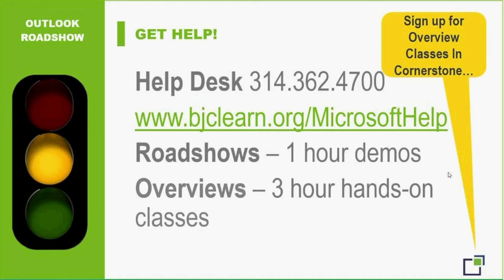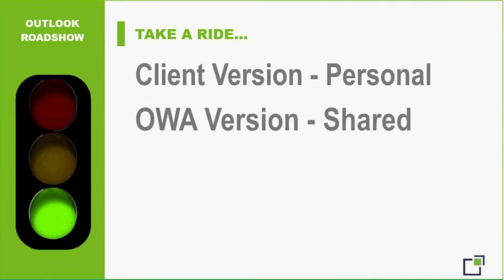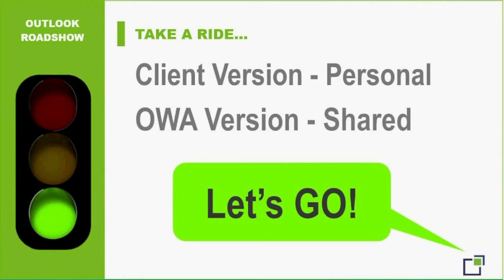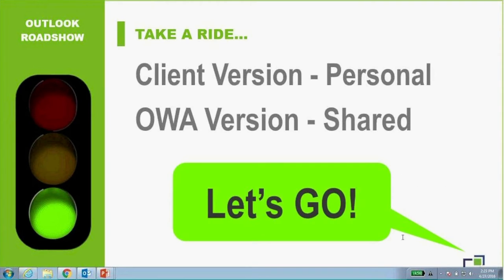Let's take a look at some of those resources. At bjclearn.org/MicrosoftHelp, clicking on the Outlook link brings you to all things Outlook - the migration schedule, handouts, roadshow schedule, webinars, lab practice times, and overview classes. The client handout shows directions for everything on the roadshow as well as the OWA version. You'll also find the migration details handout, the Outlook top 20 features, the class manual, and a FAQ forum with answers to questions compiled from roadshows.